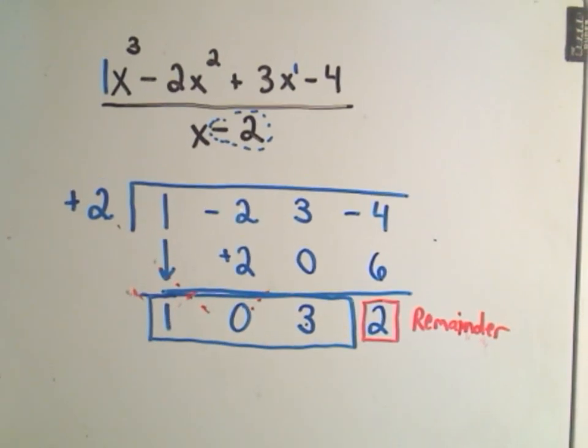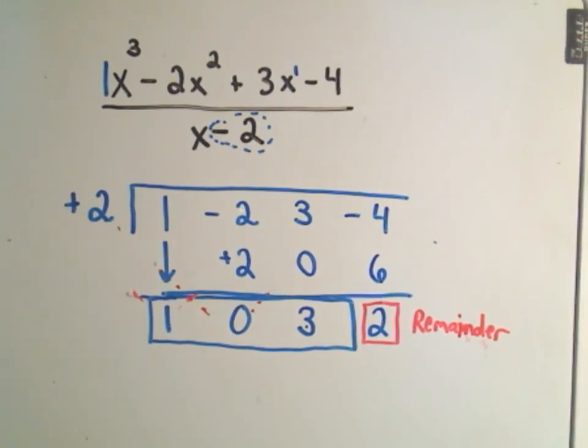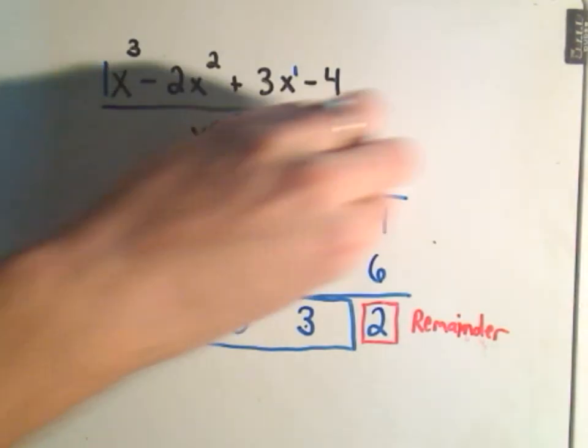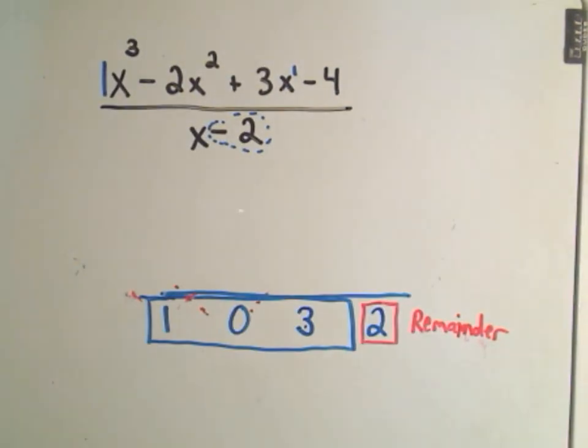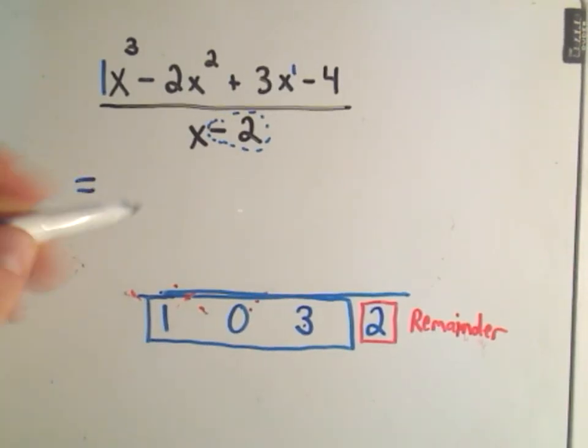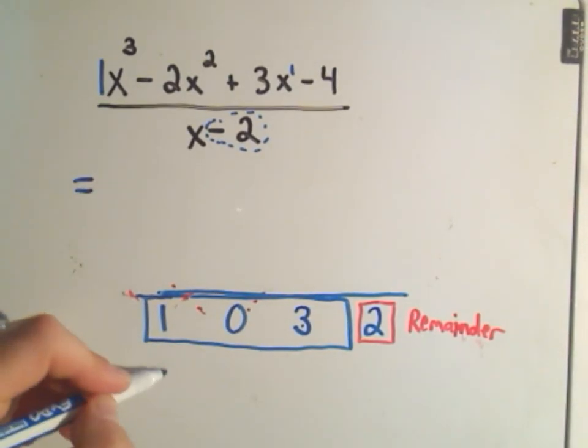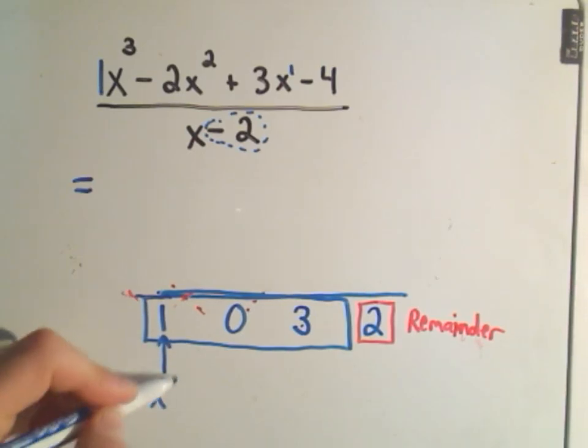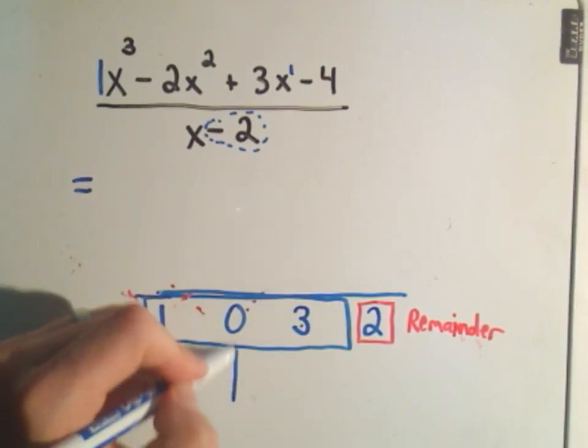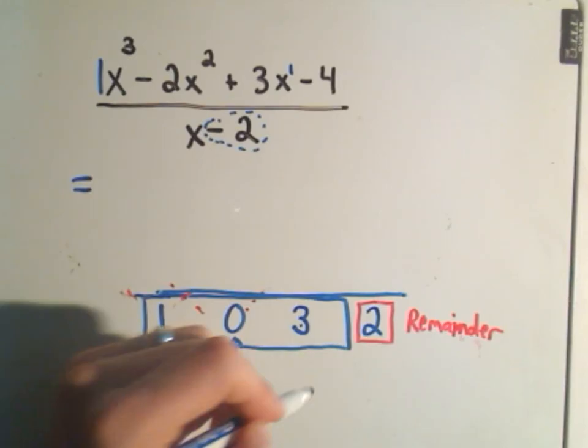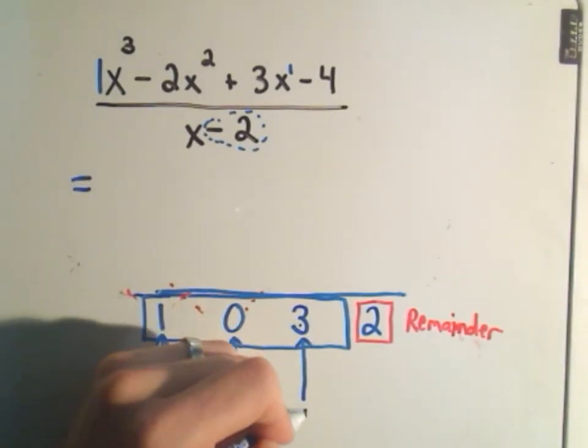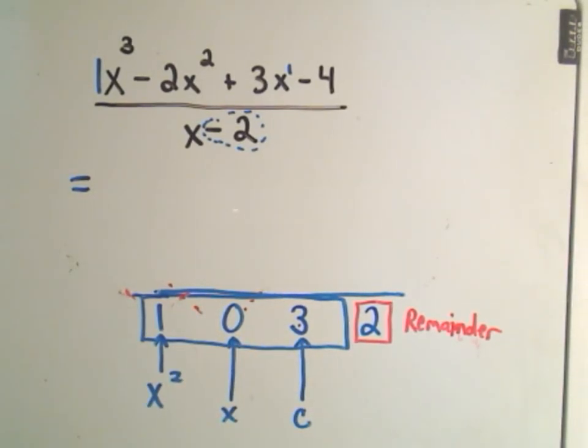So it says we can actually rewrite x cubed minus 2x squared plus 3x minus 4 divided by x minus 2. So I'm going to keep my numbers at the bottom. It says we can actually write that as, so the highest power was x cubed, make things 1 degree less. So this is going to go with my x squared term. This is going to go with my x term. This is going to be my constant. And again, the other part is my remainder.